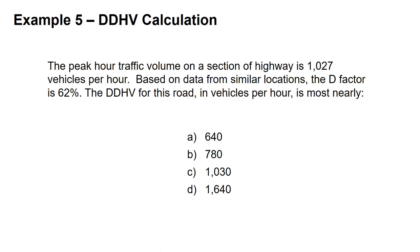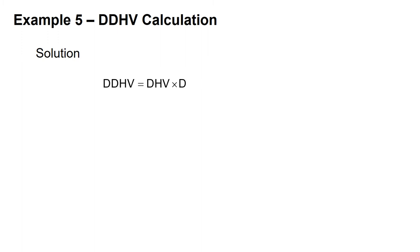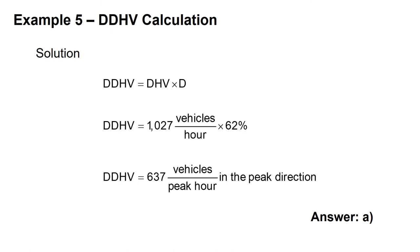Example: The peak hour traffic volume is 1,027 vehicles per hour, and the D factor is 62% — meaning the peak direction carries 62% of the traffic. We're asked for the DDHV. DDHV = DHV × D = 1,027 × 62% = 637 vehicles in the peak hour in the peak direction, which is answer A.